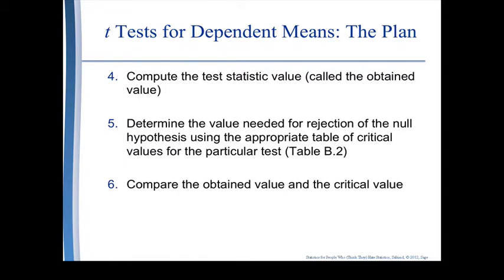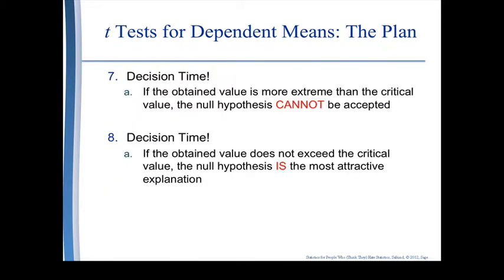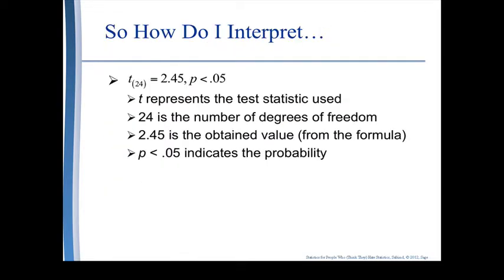Slides seven, eight, and nine have us choosing the statistic and calculating the statistic using the same process we used earlier. When we write out a paired samples t-test, remember that when we put our degrees of freedom in the parentheses beside the t, we are using the number of cases minus one, not the number of observations minus two. Otherwise everything is the same as the independent test.